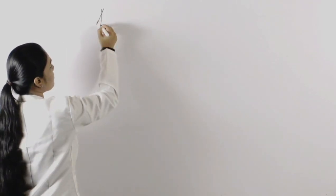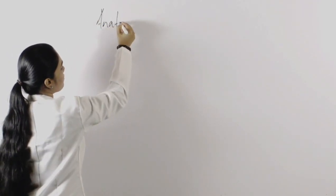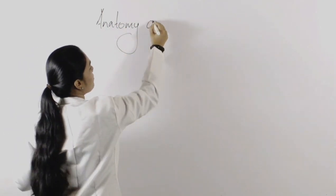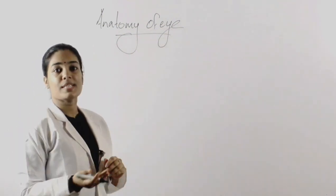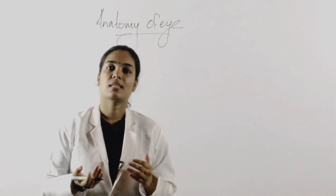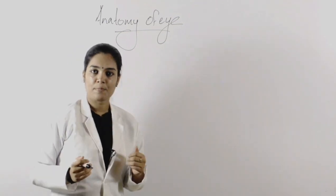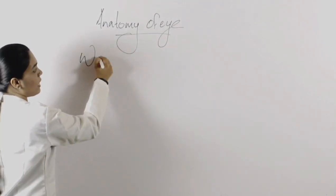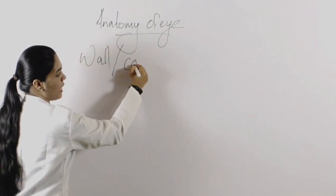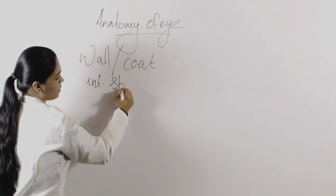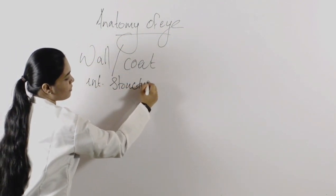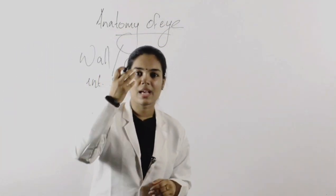Today we will be dealing with the topic: structure of the eye, or anatomy of the eye. First we will study about the walls of the eye, and then its internal structures. So first we will cover the walls or coat of the eye, and then the internal structures.